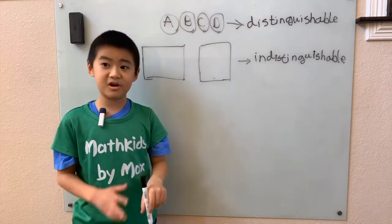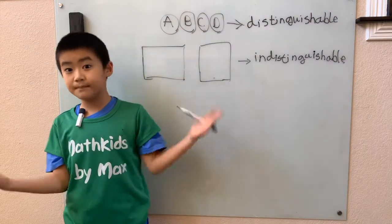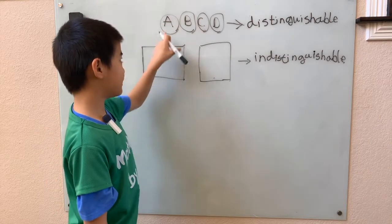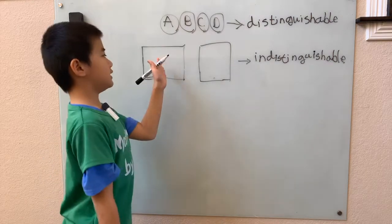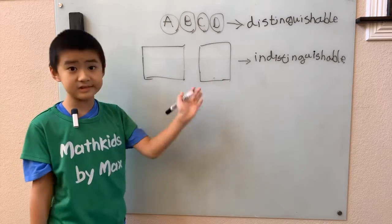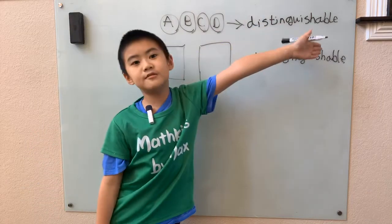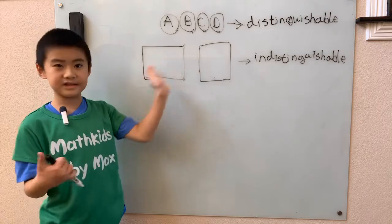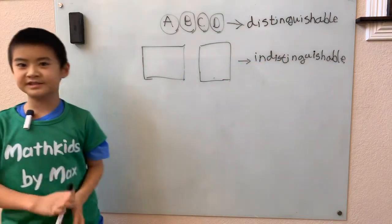These two boxes are the same — like a diamond and a diamond, they're indistinguishable. So all this means is that I don't care about which box ball A is in. Ball A could be in either box, we don't care where ball A is. But what we do care about is the distinguishable balls — what the balls are that we put in these two indistinguishable boxes.